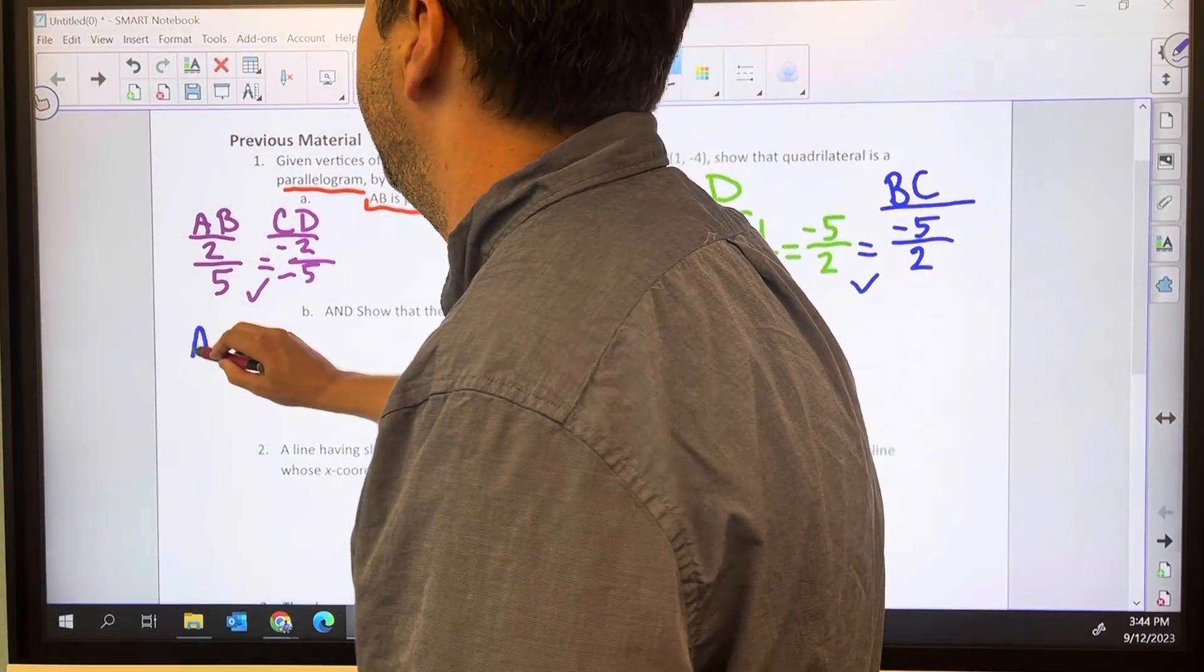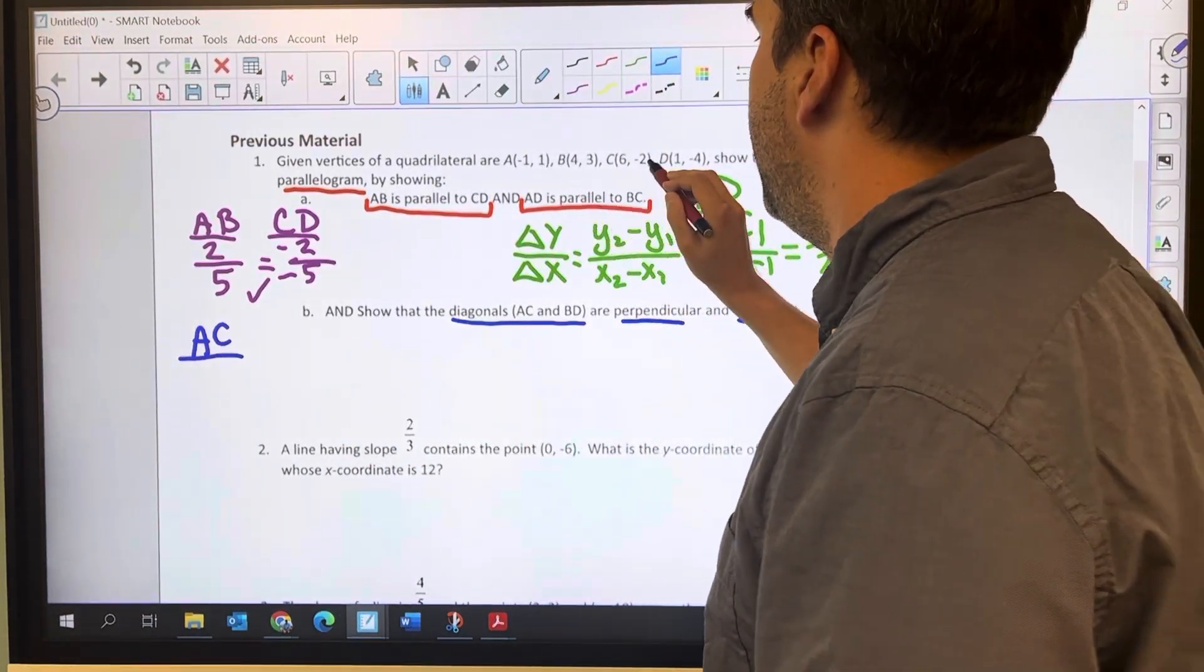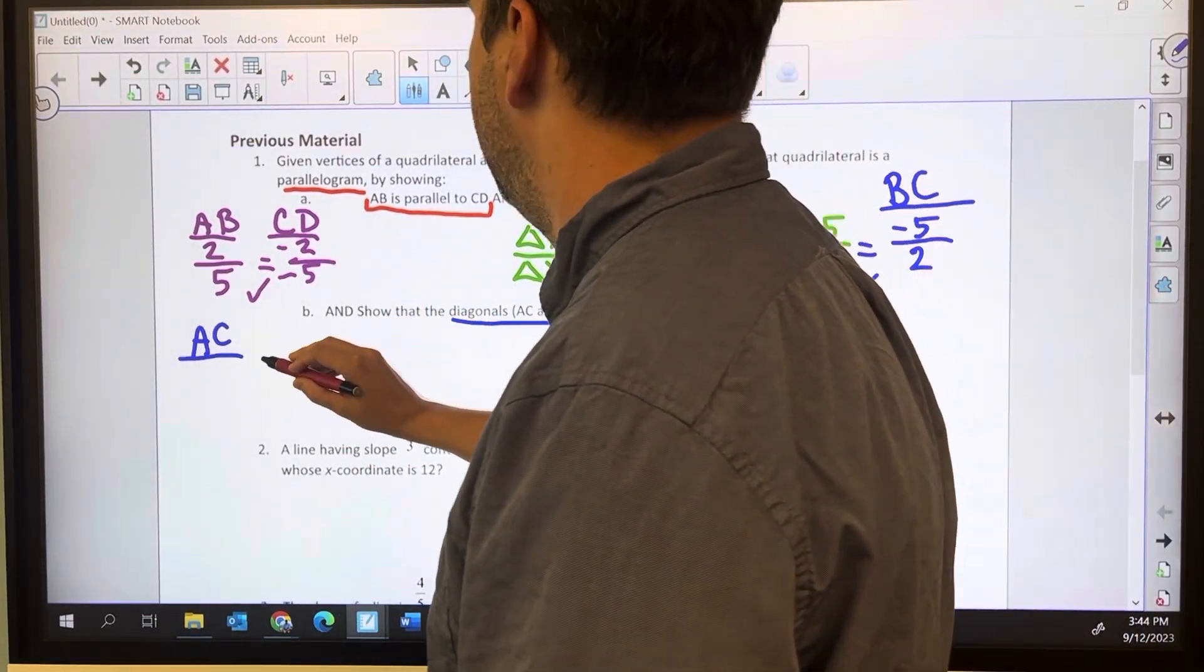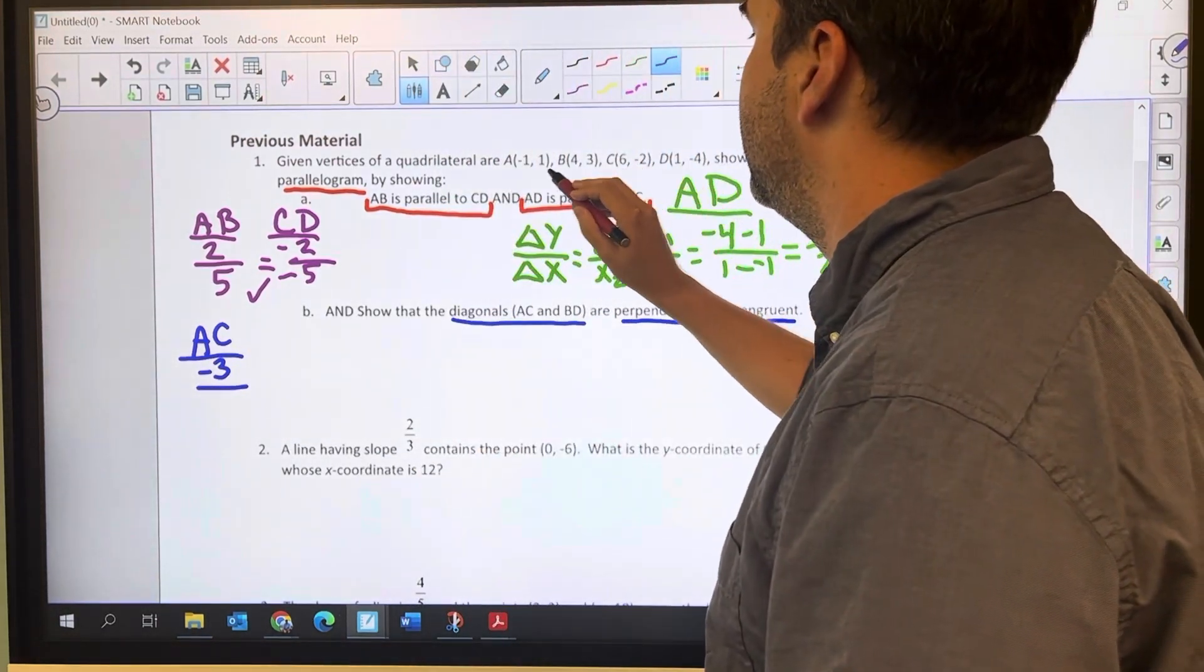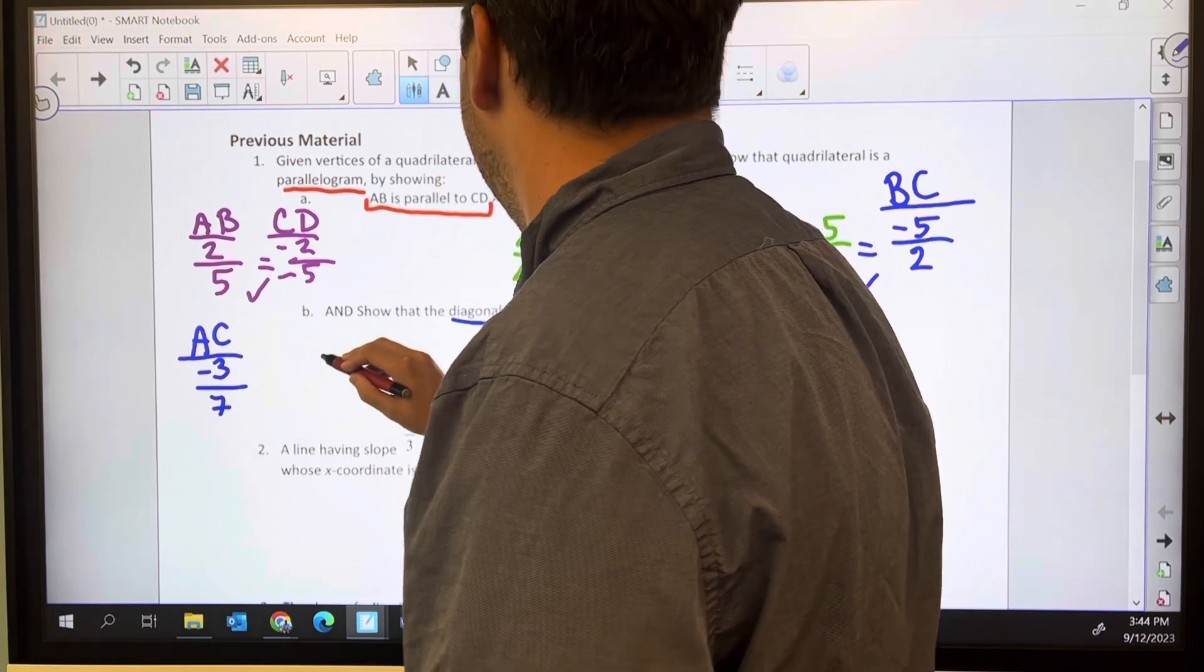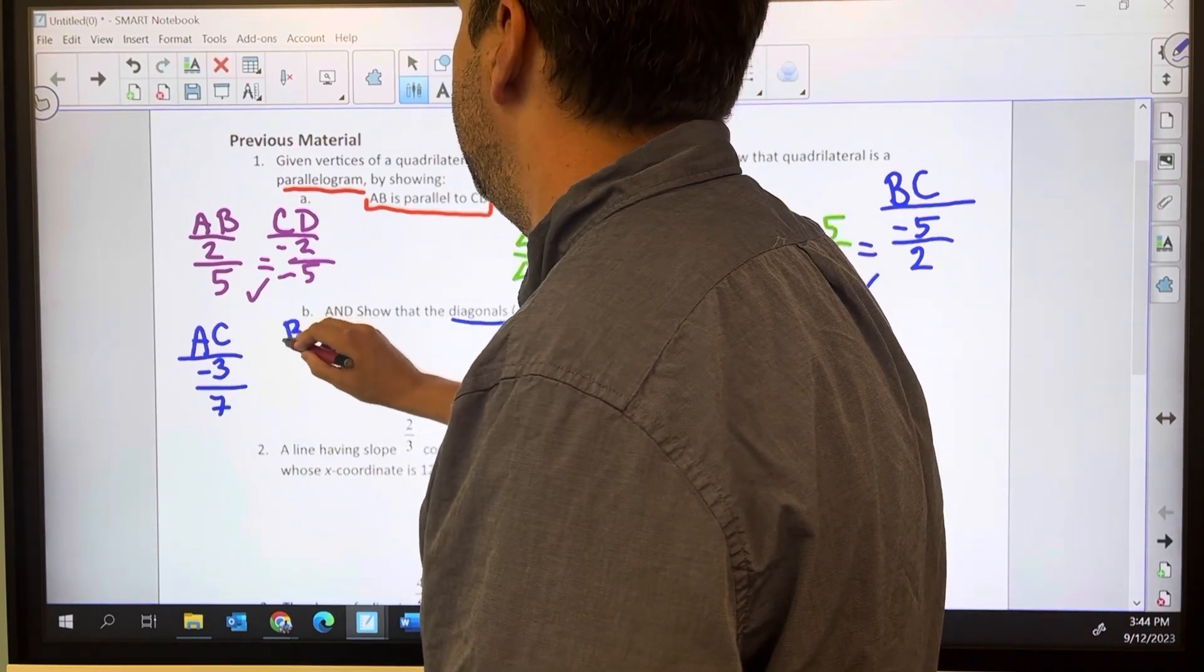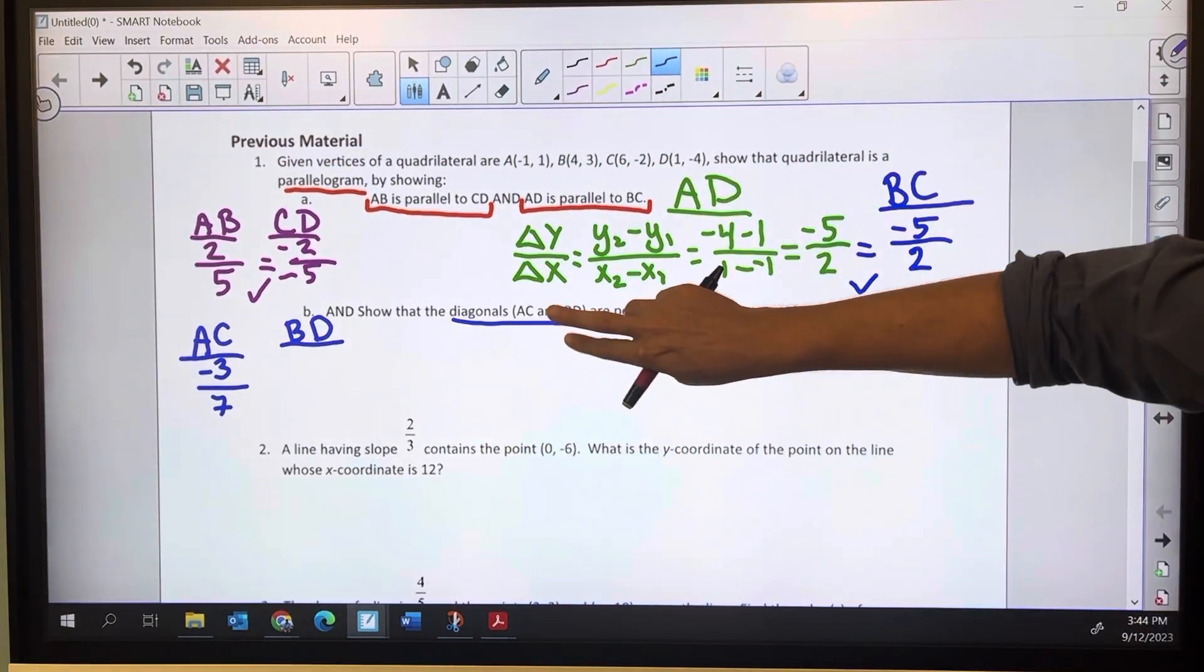So for AC slope, I've got negative 2 minus 1, which is negative 3, and then 6 minus negative 1, which is 7. And then for BD, I'm looking for positive 7 over 3. That would be the opposite reciprocal there.